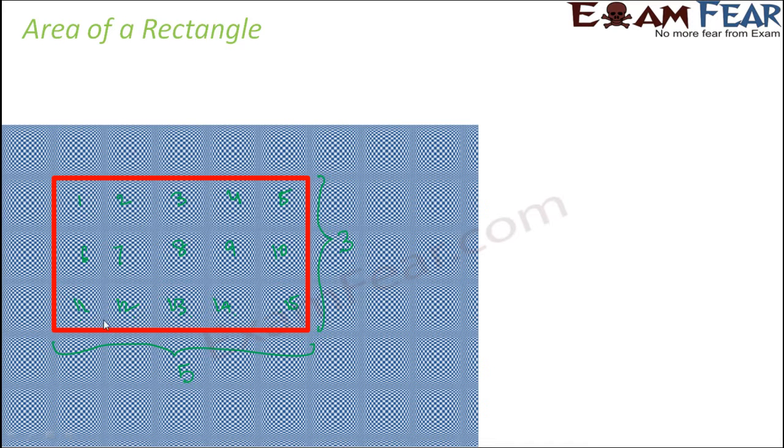So how many total squares do you have? That is nothing but 5 into 3 because there are 5 squares in 3 different rows. So total how many squares do you have? 5 multiplied by 3. So if I ask you to find out the area, the area would be 5 into 3 square units because the area of each square is 1 square unit. Therefore, the area of this rectangle would be 15 square units because total 15 squares are included inside this rectangle.